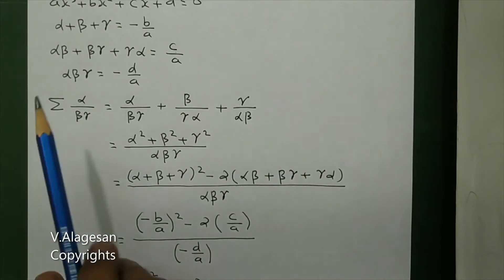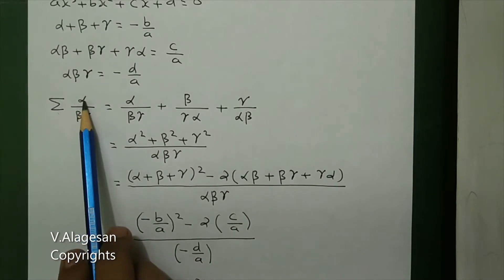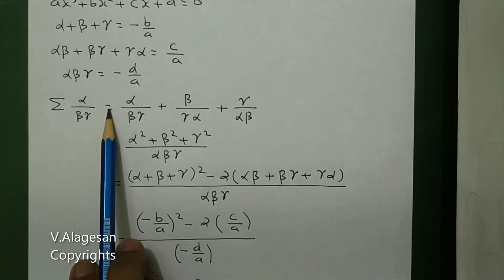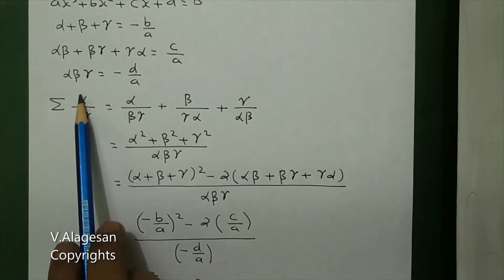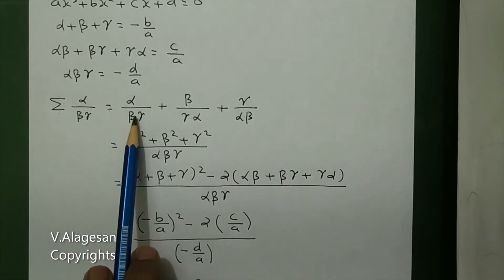Next, summation of alpha by beta gamma. The first term in the expansion is alpha by beta gamma.